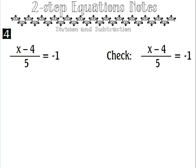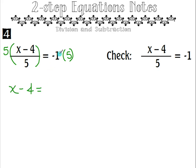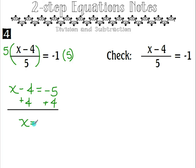One more to go. We have x minus 4, all of that divided by 5, equals negative 1. Recall that the whole numerator is divided by 5, not just x. So we multiply both sides by 5, leaving us with x minus 4 equals negative 1 times 5, which is negative 5. Then undoing this subtraction of 4, we add 4 to both sides, so x equals negative 1.